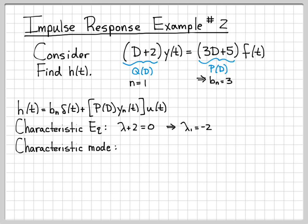So that means our characteristic mode, there's only one of them because there's only one root, is equal to e to the negative 2t. So that's the characteristic mode. There's only one of them. Yn(t) is a linear combination of the characteristic modes. So we can form yn(t) by taking a linear combination of the one thing there. So we put the arbitrary constant k1 out front.